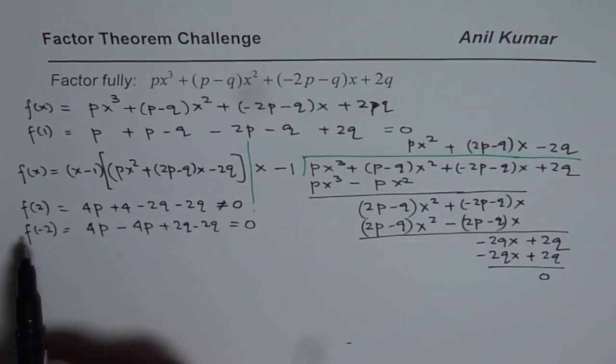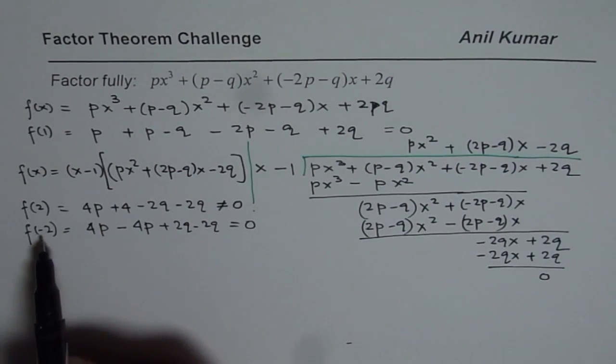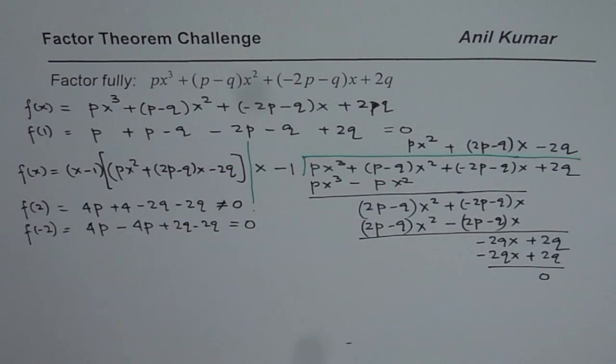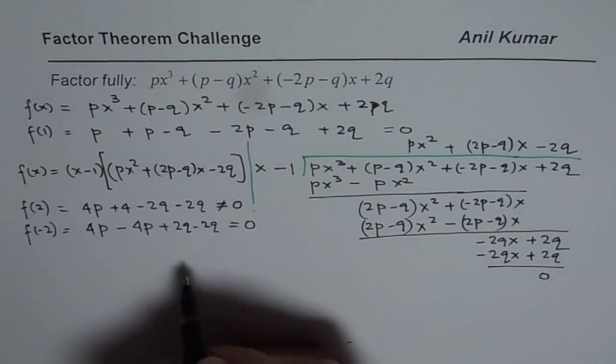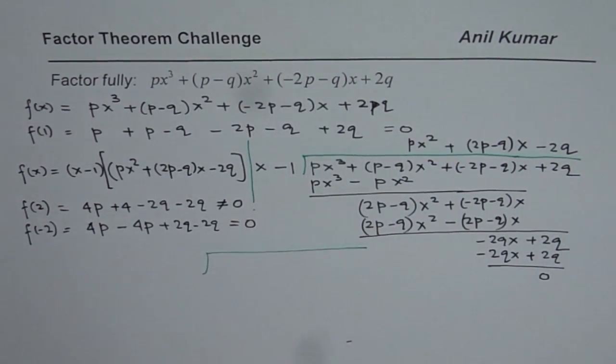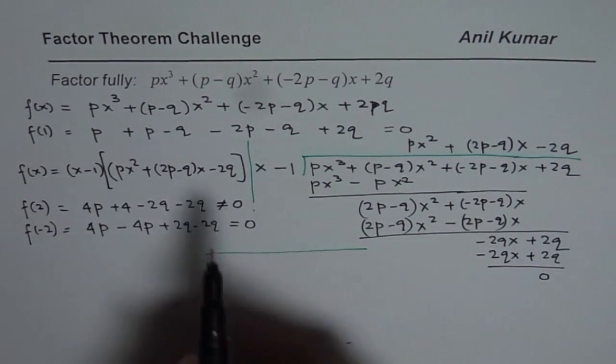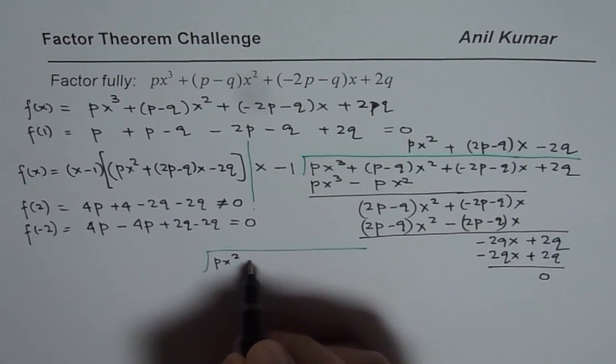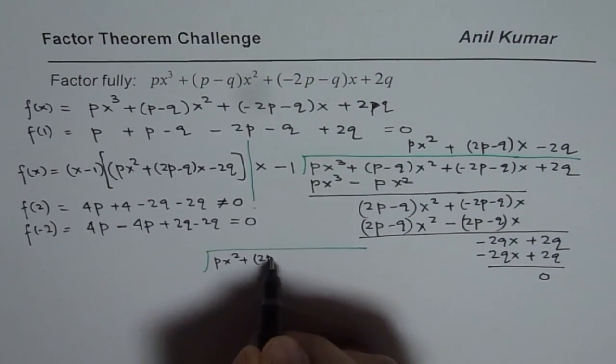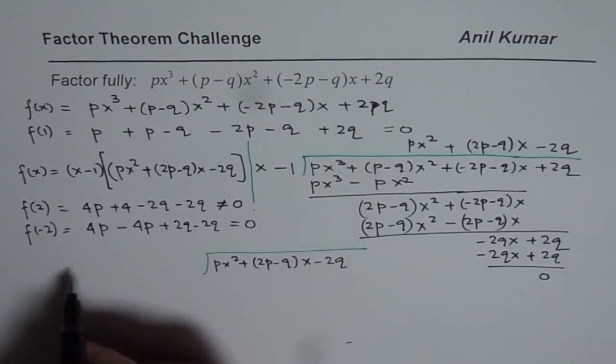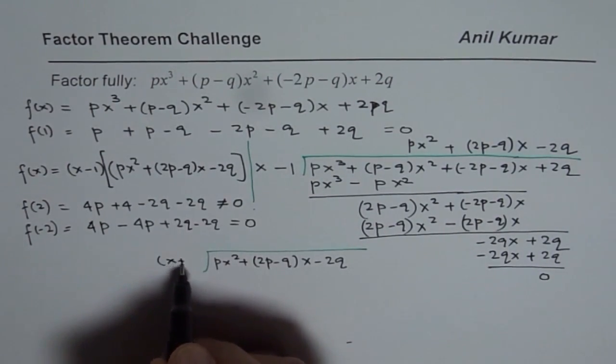That means x minus -2 is a factor. So now we can divide this term by x+2. So let us further divide by x+2 and investigate. So what we have now is the polynomial, which is px² + (2p-q)x - 2q,